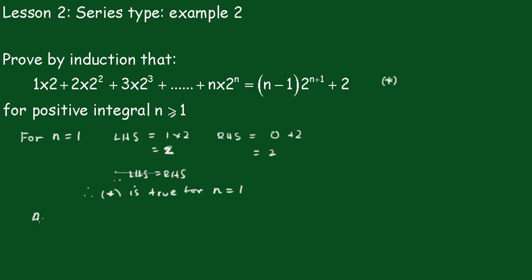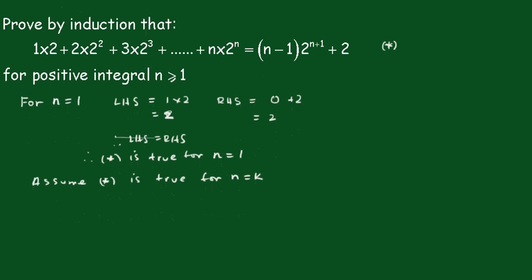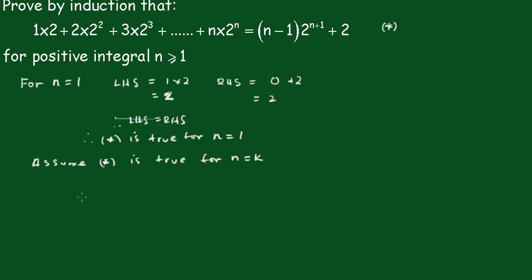Now again we assume that the statement is true for n equals k. That is the easy bit — just replace the n with k. So we write it out as 1 times 2 plus 2 times 2 squared, plus all the way up to k times 2 to the k, is equal to (k minus 1) times 2 to the k plus 1, plus 2. We'll call that the assumption statement.